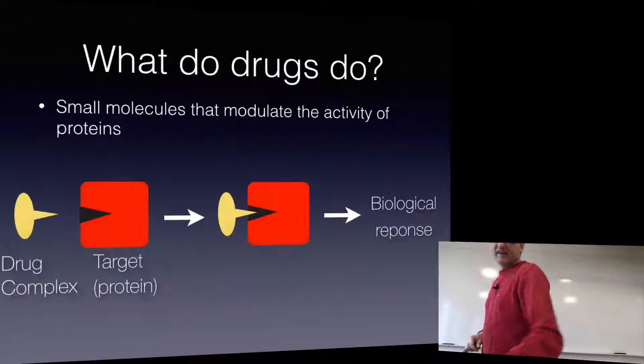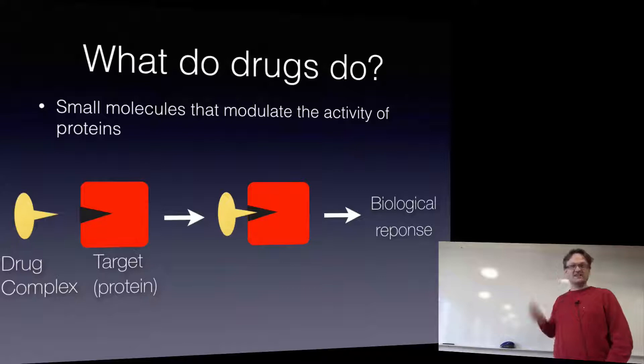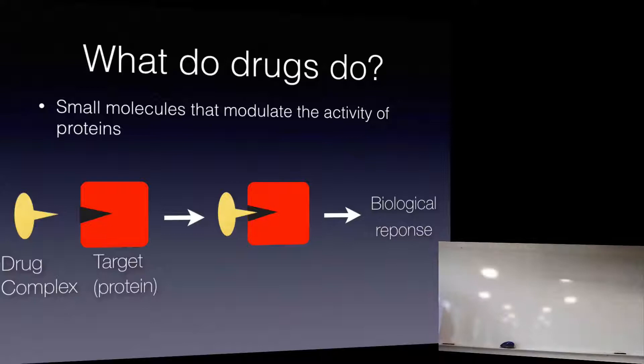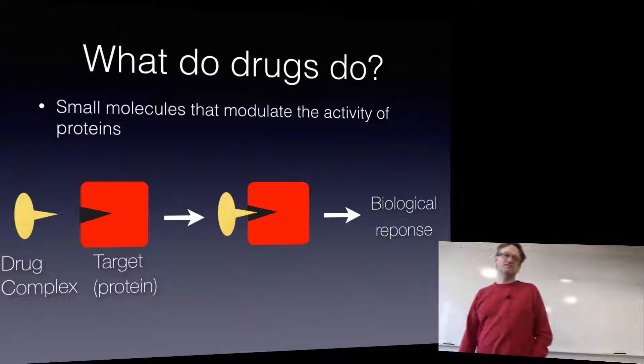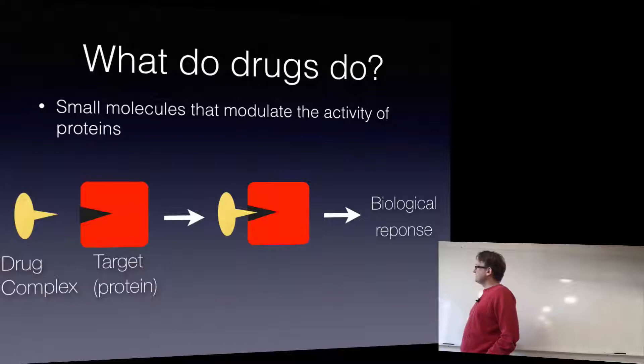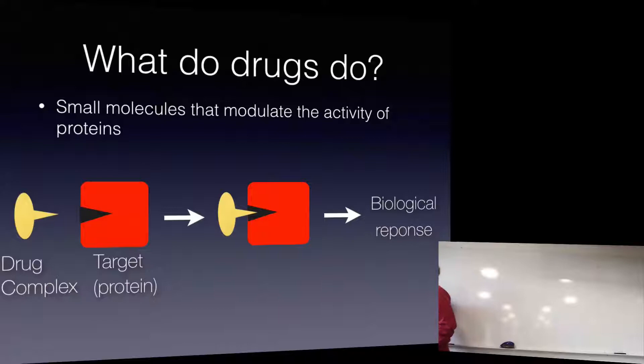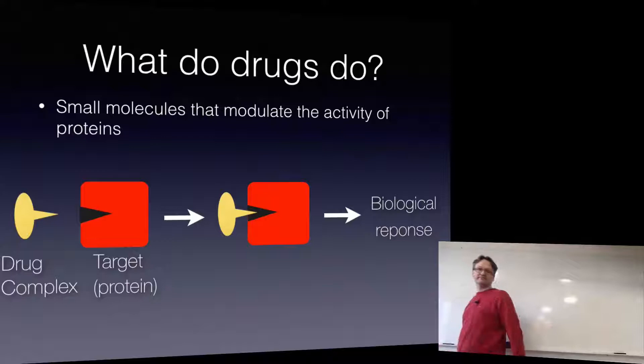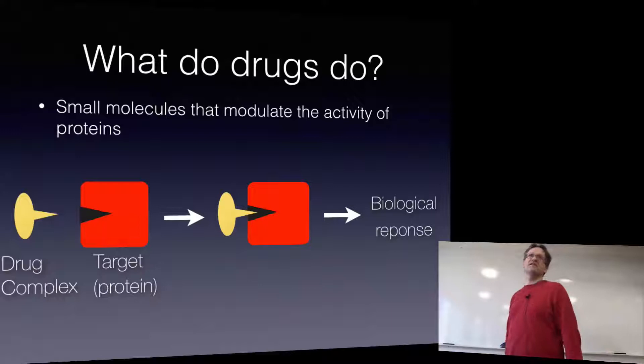Everything in pharma works this way. The problem is you want the right thing to happen, not the wrong thing. Finding something that binds — that's trivial. With the existing knowledge you have now, if you have a couple of days of experience, you could design things that bind. The problem is that it's very easy to end up with things that bind in a hundred other places too, and that's going to cause side effects. You only want things to bind in the right place, not in the wrong place. That's super hard.